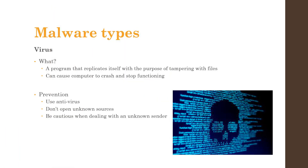Next, let us talk about malware types. The first type is a virus. A virus is a program code which can replicate itself with the intention of deleting or corrupting files on a computer. It can also cause the computer to crash or stop functioning. You can prevent viruses by installing anti-virus software, not opening or being cautious when opening unknown sources. Most importantly, we must always be careful when dealing with an unknown sender.